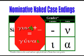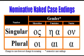Now let's talk about the first declension — nouns whose stem vowel ends in either alpha or eta. In the singular feminine nominative form, there is no case ending. In the plural feminine nominative form, an iota is attached directly to the vowel.